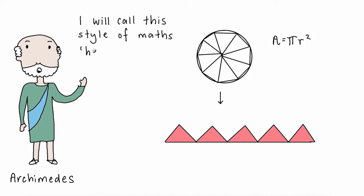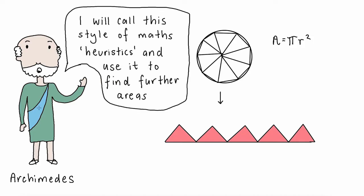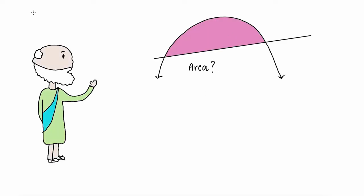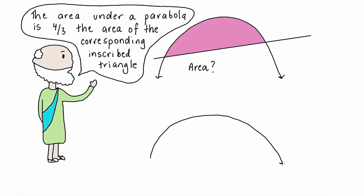Archimedes used the method of exhaustion to calculate further areas such as the area under a parabola and the surface area and volume of a sphere.